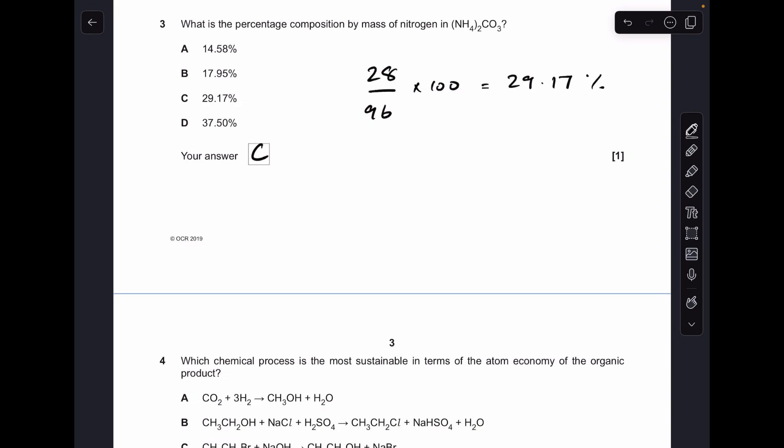Number three, so we take the MR of two nitrogens because it's NH4 twice divided by the MR of the whole thing, multiply by 100 to get it as a percentage. You can see C is the answer there.